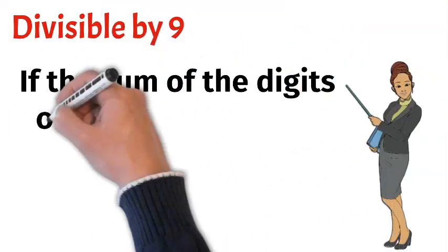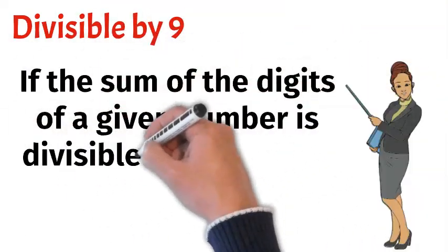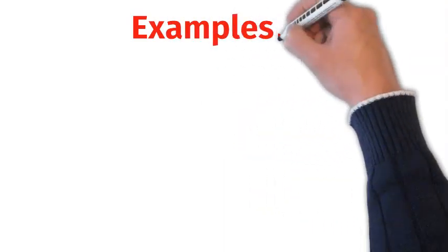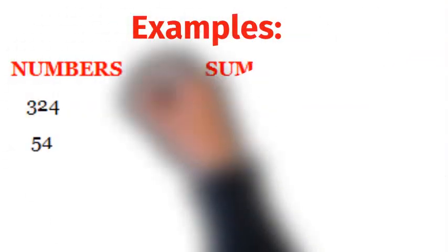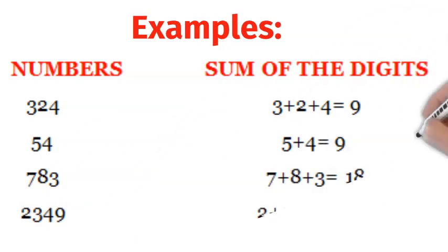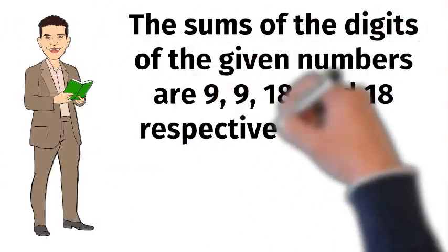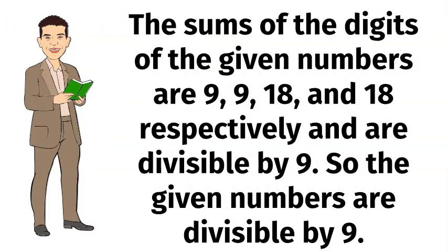Divisible by 9. If the sum of the digits of a given number is divisible by 9, then the number is also divisible by 9. Let's take some numbers: 324, 54, 783, 2349. The sums of the digits of the given numbers are 9, 9, 18 and 18 respectively, and are divisible by 9. So the given numbers are divisible by 9.